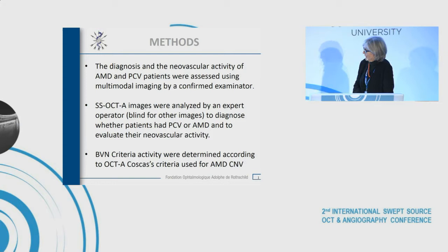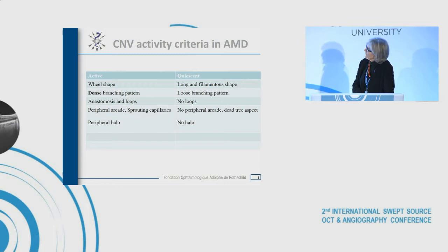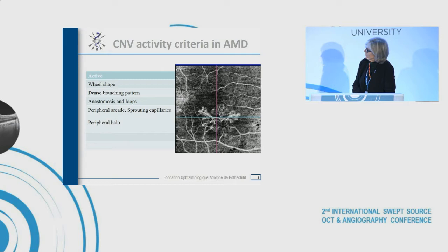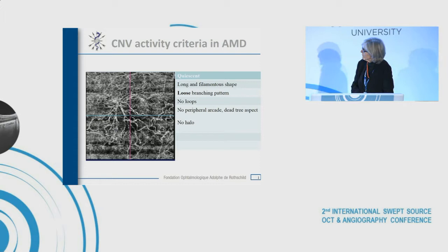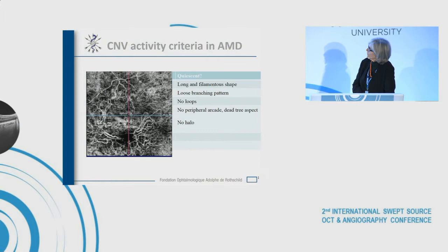With COSCAS criteria, an active CNV shows a dense branching pattern, well-shaped anastomosis and loops. A quiescent CNV shows a loose branching pattern, long and filamentous shape, with no loops. Sometimes it is very difficult to evaluate the activity of a CNV with a loose branching pattern, but when we see the color photograph, it can still be an active CNV.